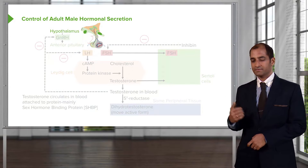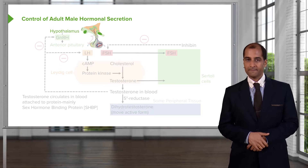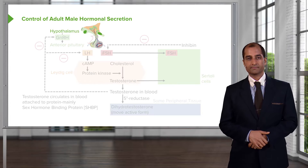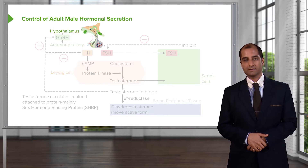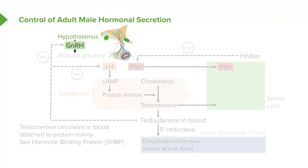Close your eyes and conceptualize this. We begin at the hypothalamus. Gonadotropin-releasing hormone, GnRH, is released in a pulsatile fashion — boom, boom, boom, boom, boom. Out comes GnRH, which works upon the anterior pituitary, and from the anterior pituitary out then comes LH and FSH.